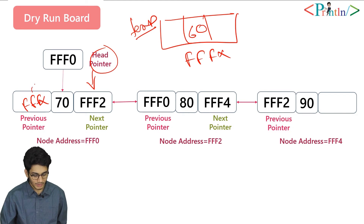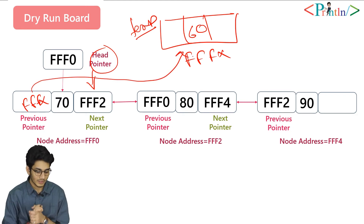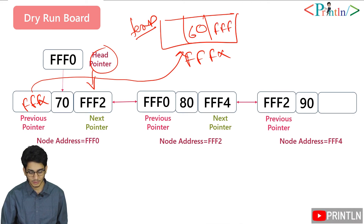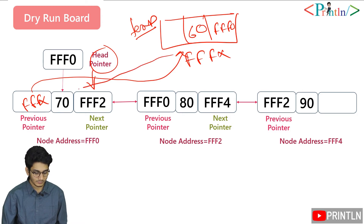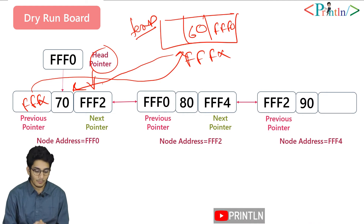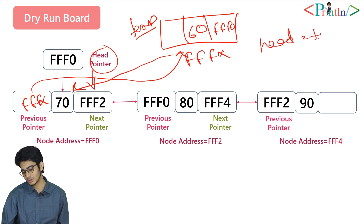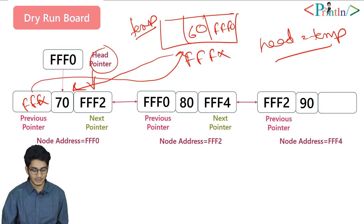Now this node is pointing to this node as well. The other connection we have to make is to assign temp next equals to head. That means we'll assign what is the value of head now — that is fff0 — we'll assign fff0 here. Now this node is also pointing to this node. The rest thing we have to perform is to write head equals to temp. It means our head will be pointing to this node.